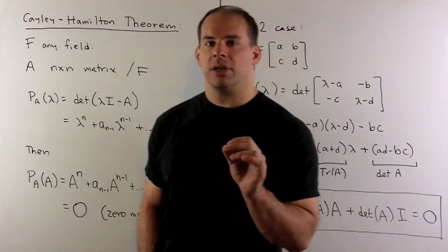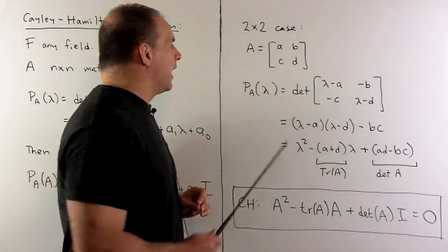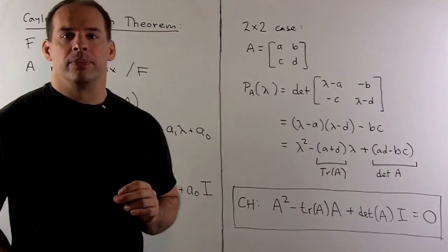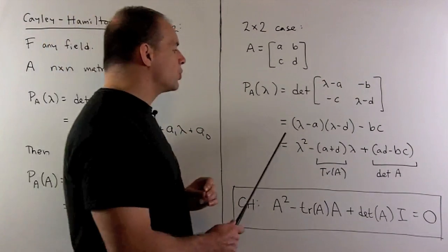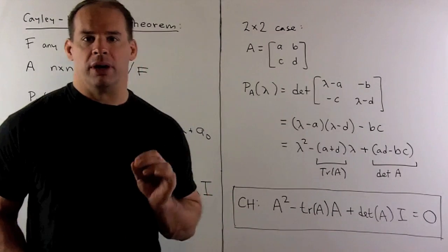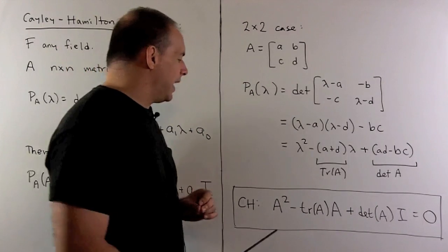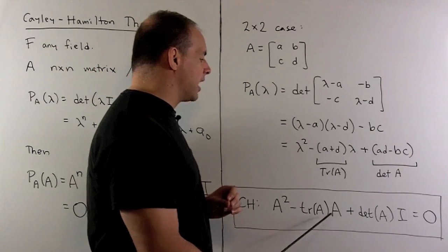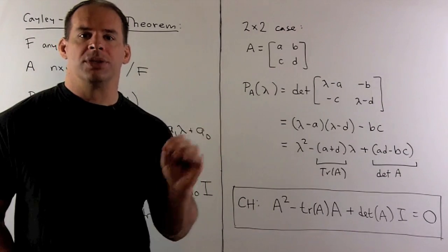Now, in the 2x2 case, we get a nice formula. So, if I have A equal to [a b; c d], I form the characteristic polynomial. We get lambda squared minus the trace of A times lambda plus the determinant of A. Cayley-Hamilton then states, A squared minus the trace of A times A plus the determinant of A times I is equal to the 0 matrix.